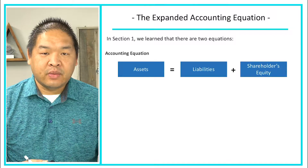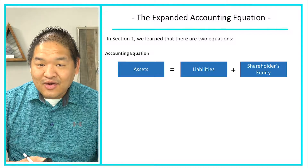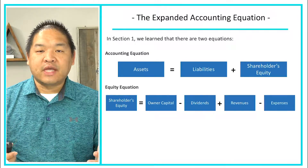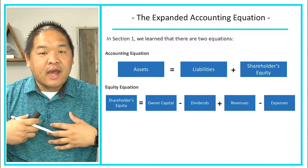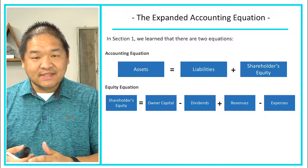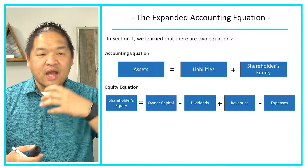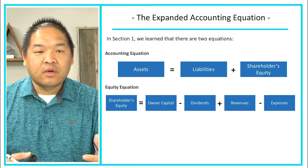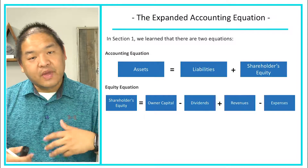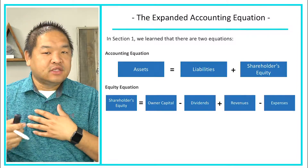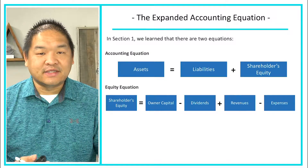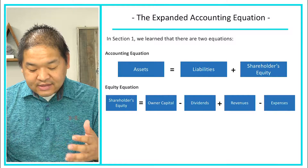There was also another equation from section one that you might not necessarily remember — the equity equation. Stockholders equity equals owner's capital, which is the owner's contribution into the organization, minus dividends. If I take a dividend out of the organization, I'm basically getting my money back. So we add owner's capital, subtract dividends, add revenue, and subtract expenses — that's net income. That is the equity equation.